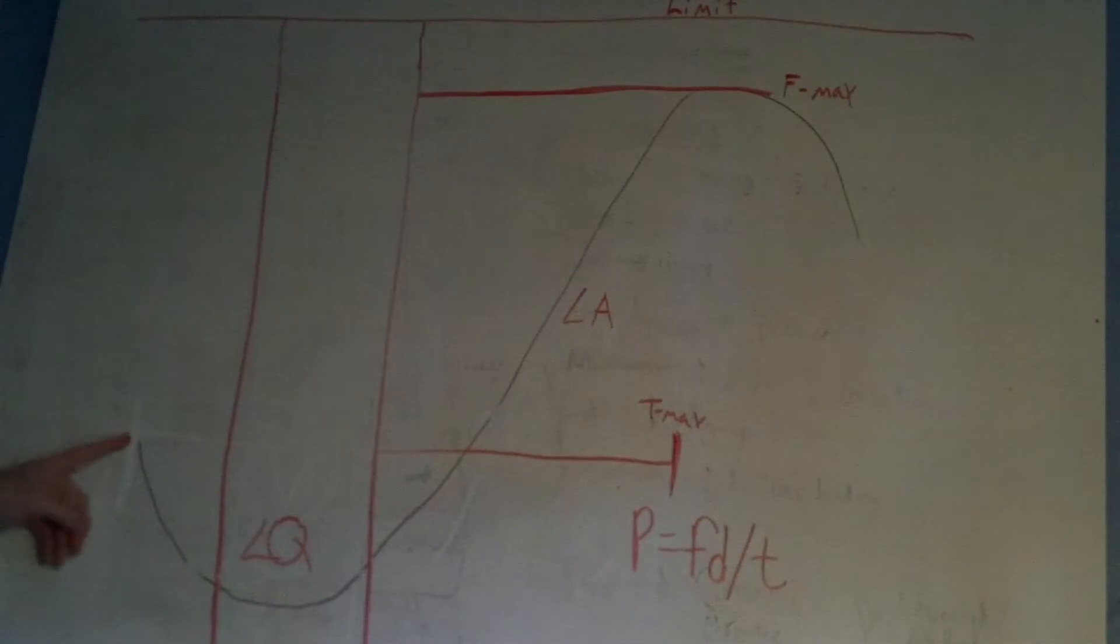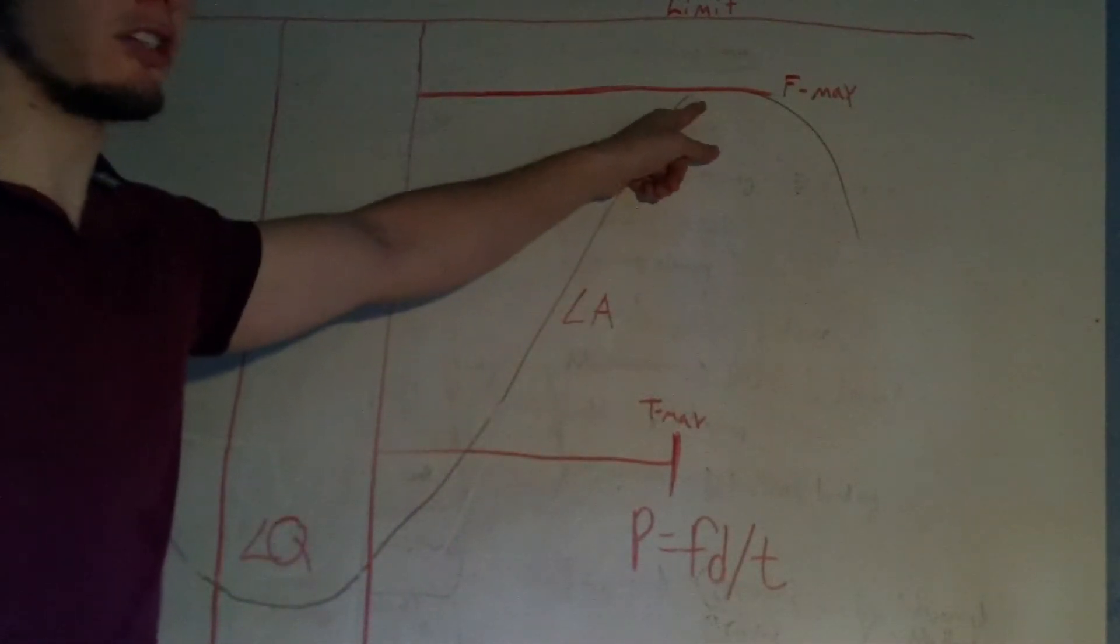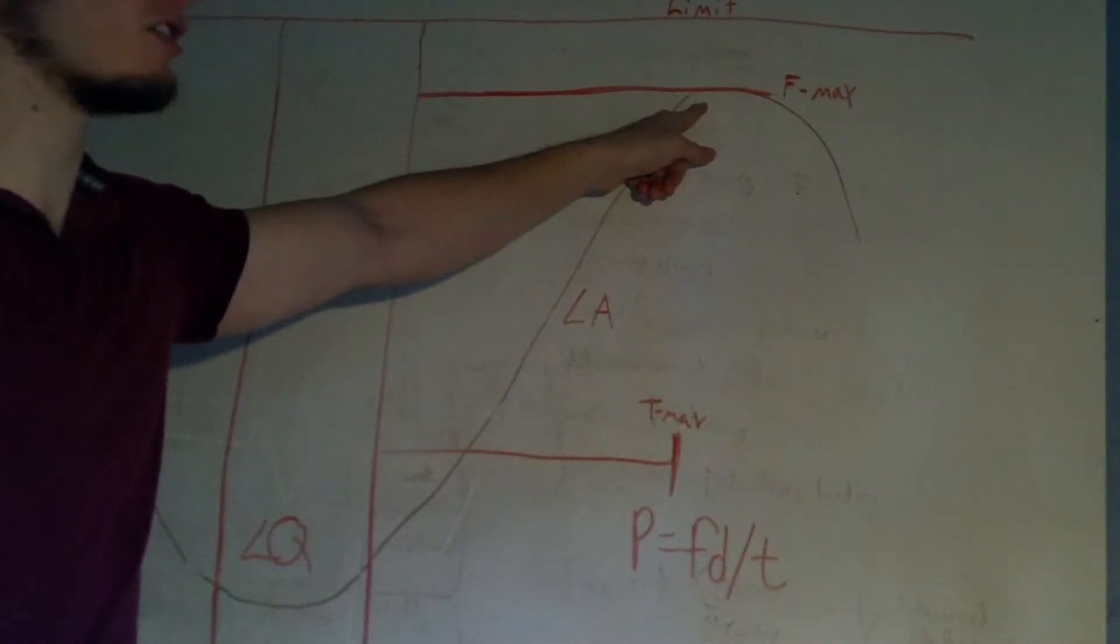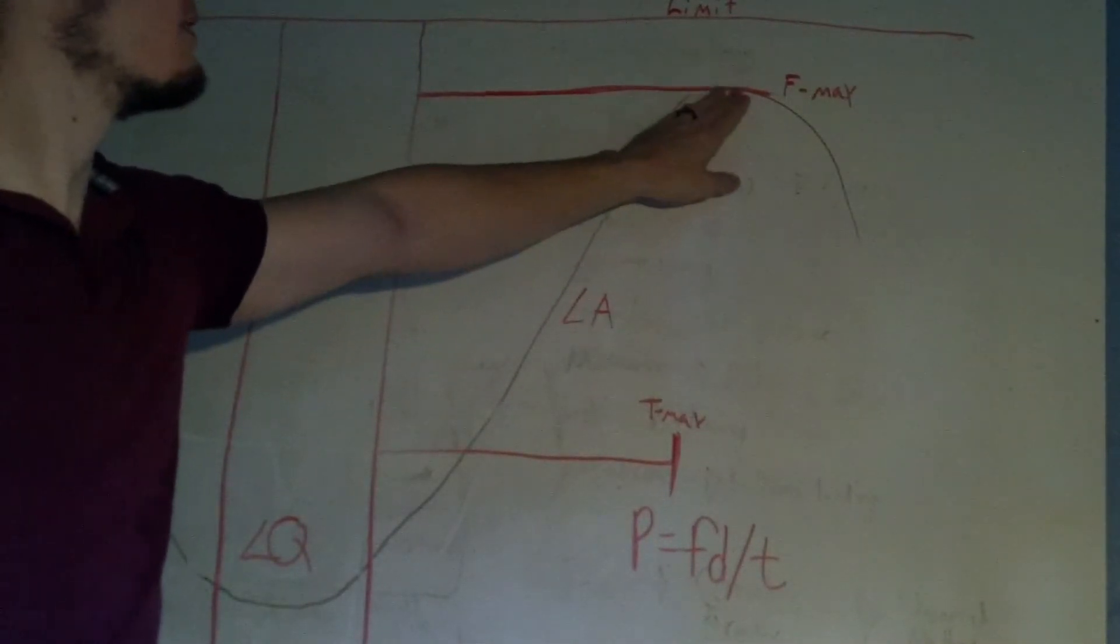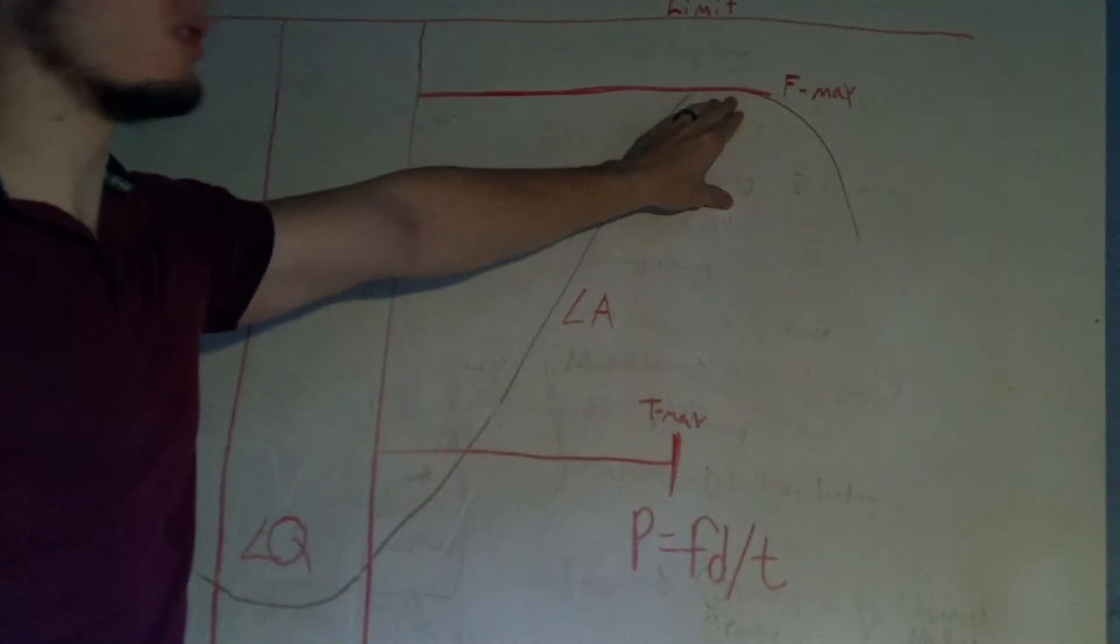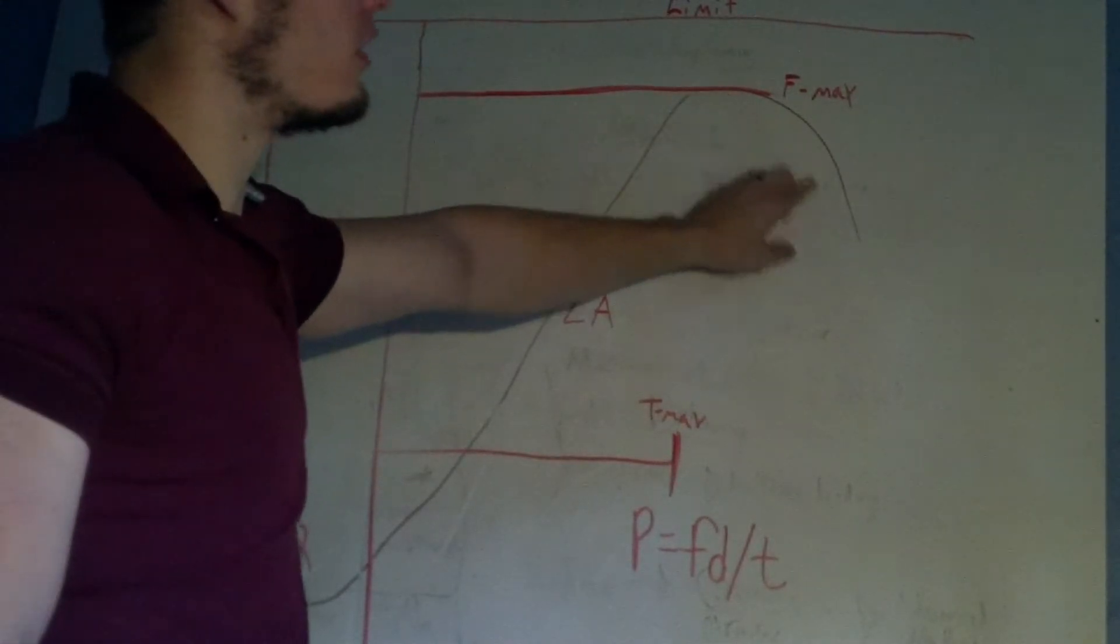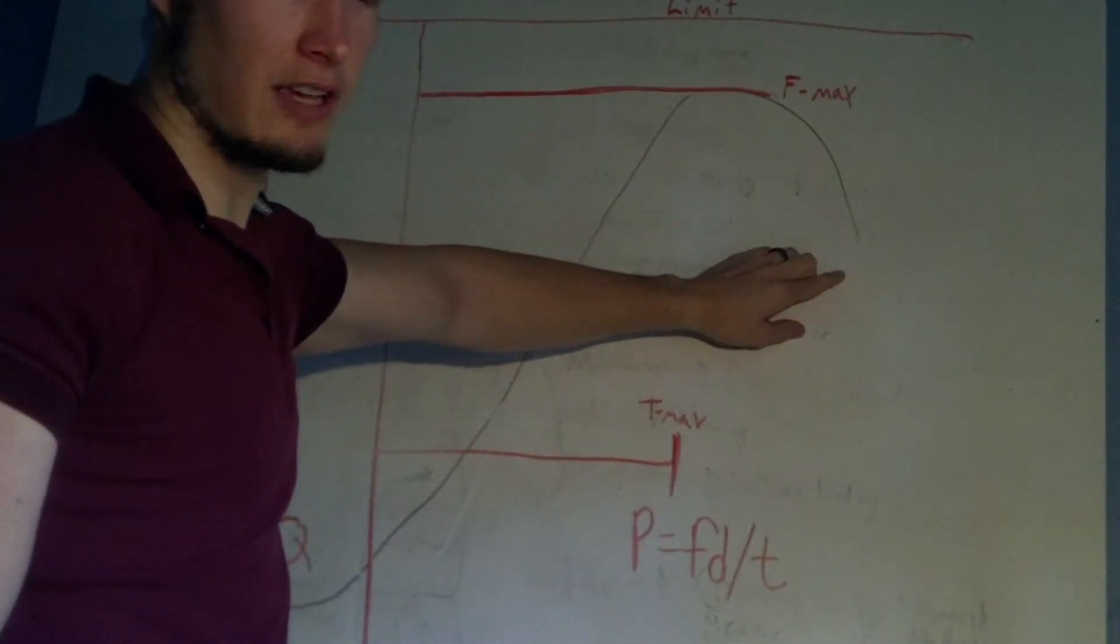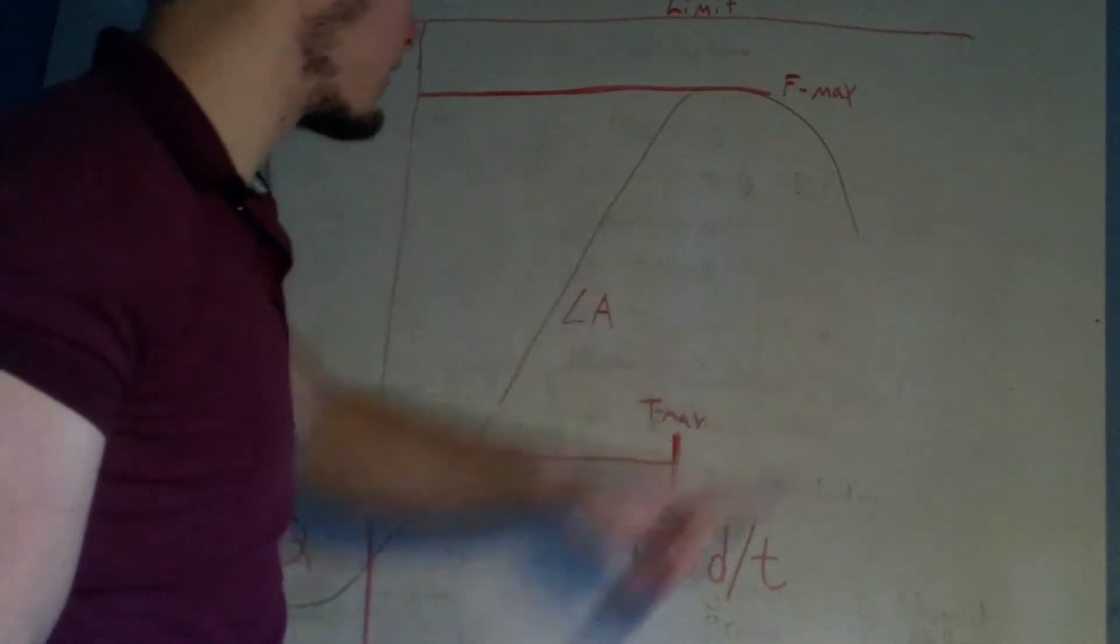The strength curve basically slopes. You have an eccentric period coming down, you have the amortization or the direction change phase of the lift, also called angle Q. You have an acceleration phase in which you're concentrically contracting, you're accelerating and lifting the weight. You have a point at which you reach a maximum force for the motion. And then of course you have a returning eccentric phase and a force loss phase afterwards.